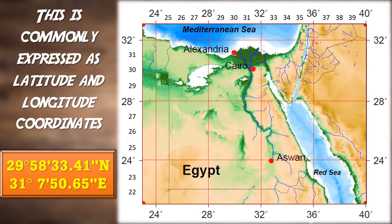Let's look at an example. Using the coordinates in the orange box in the bottom left corner, let's find the absolute location of a very famous Egyptian landmark.